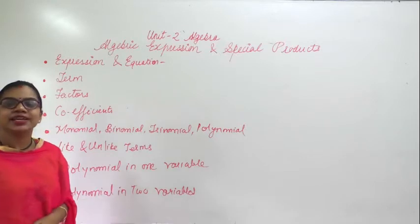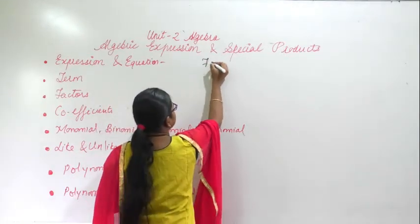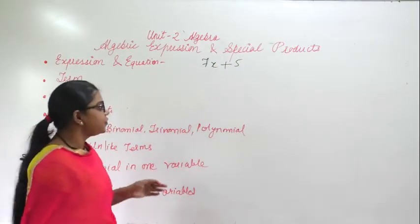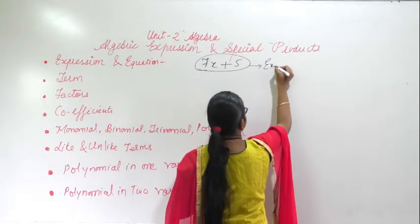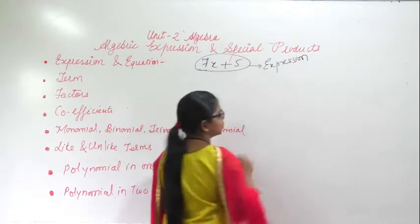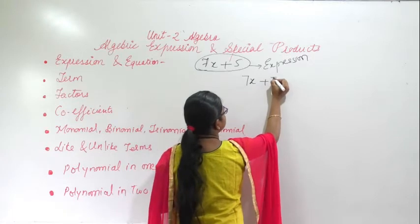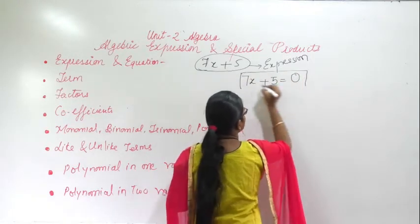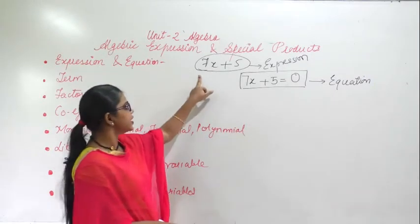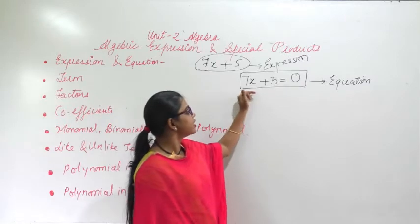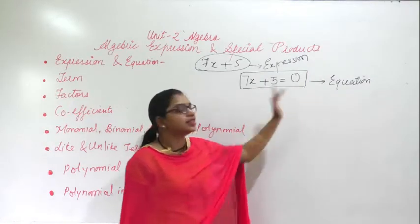The first point is Expression and Equation. Suppose if I write 7x plus 5 — this is an expression. But if I write 7x plus 5 equal to 0, this will become an equation. So when I write 7x plus 5, it is an expression, but equating it with 0 makes it an equation.